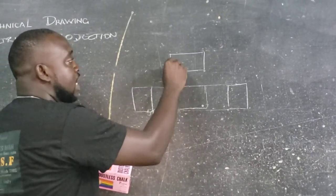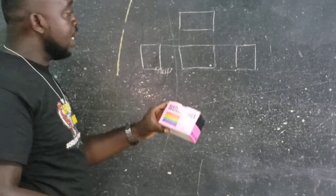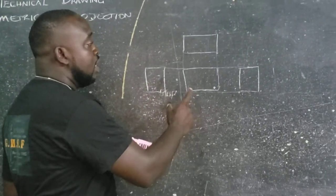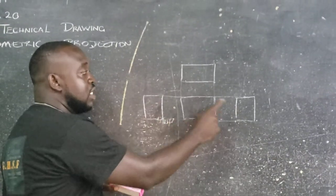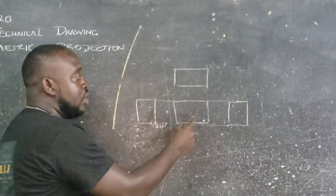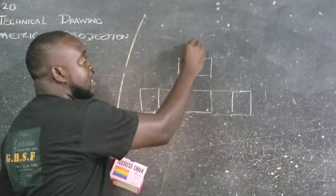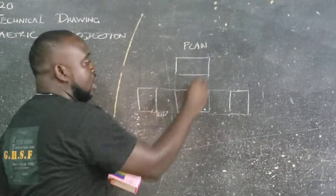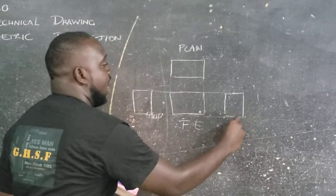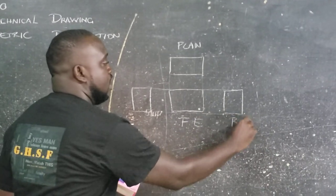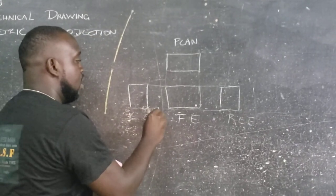For the front elevation as well as the plan, they are going to be similar in width. So I am just going to go ahead and draw. That is our plan. This is our front elevation. This is our right elevation. And this is our left elevation.